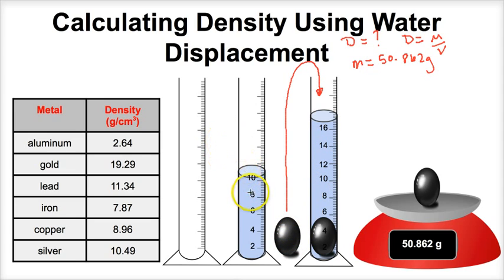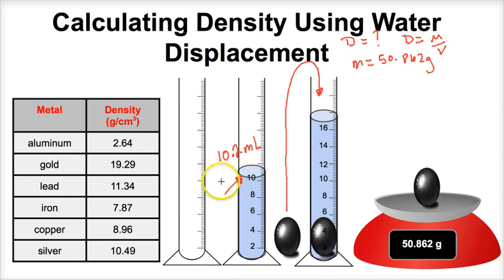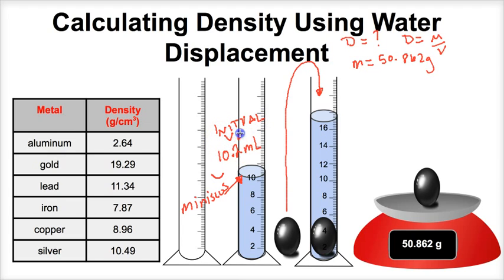The initial volume of this water that we arbitrarily filled up reaches 10.2 milliliters. When you pour water into a graduated cylinder it's going to have a tendency to bow — that little bow is called a meniscus. Whenever we take a measurement in a graduated cylinder we're always going to want to read from the bottom of the meniscus. So the initial volume of this water here is 10.2 milliliters.